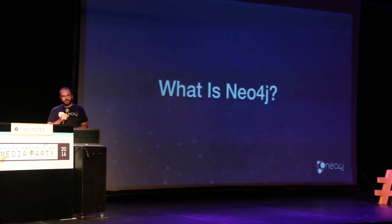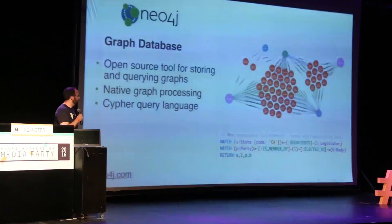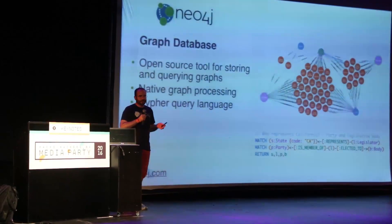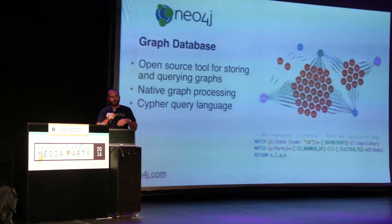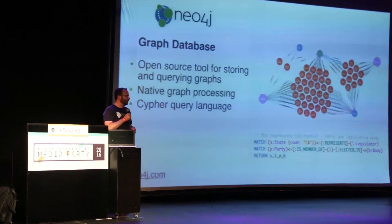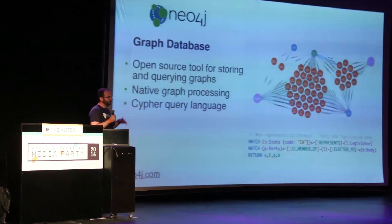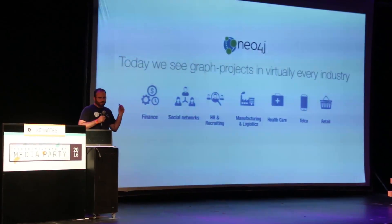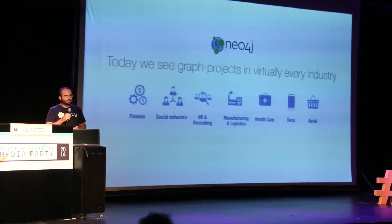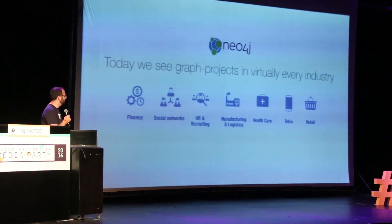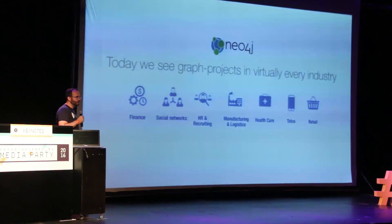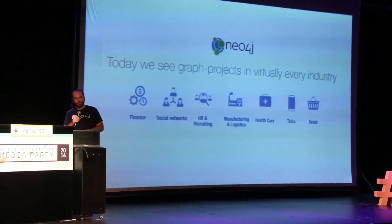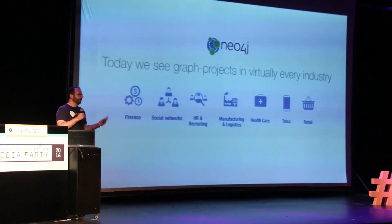So we've talked about graphs — what exactly is Neo4j? Neo4j is an open source database that models and queries your data as a graph. We use a query language called Cypher to interact with the graph. We have lots of customers across many industries — in retail, for example, Walmart.com uses Neo4j to generate product recommendations, and many banks use Neo4j for fraud detection.